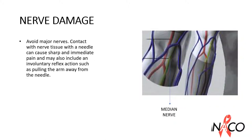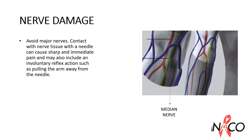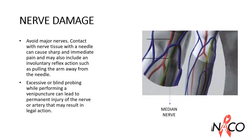Avoid major nerves. Contact with nerve tissue by the needle can cause sharp and immediate pain, and may also induce an involuntary reflex action such as pulling the arm away from the needle. Both the median nerve and the brachial artery lie close to the basilic vein. Excessive or blind probing while performing a venipuncture can lead to permanent injury of the nerve or artery, which may result in legal action.